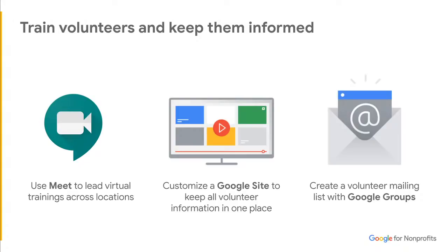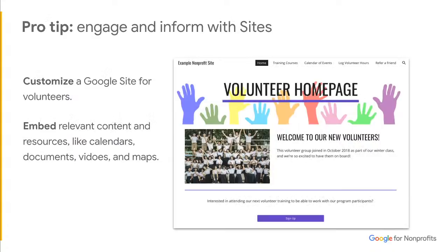You can also create volunteer mailing lists with Google Groups. If you've recruited volunteers through a Google Form, you can take all their emails and create a Google Group, then email that list instead of emailing people one by one — making sure you don't forget anyone and it's quick to send information to all your volunteers. On a Google Site, you can embed relevant content and resources — a training, a presentation, a calendar with volunteering shifts — so if someone wants to volunteer, they can access the site and see available spots and sign up right away.